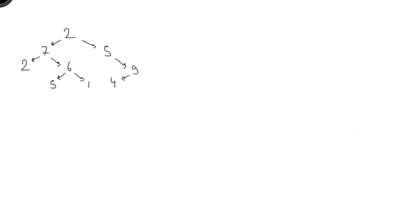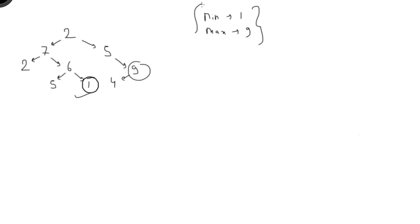This can be posed as two separate questions: find the maximum value in a binary tree, and find the minimum value. We'll try to get both values in a single function, though you can have separate functions as well. Looking at this binary tree, the minimum value is 1 and the maximum value is 9, so our min should be 1 and our max should be 9.